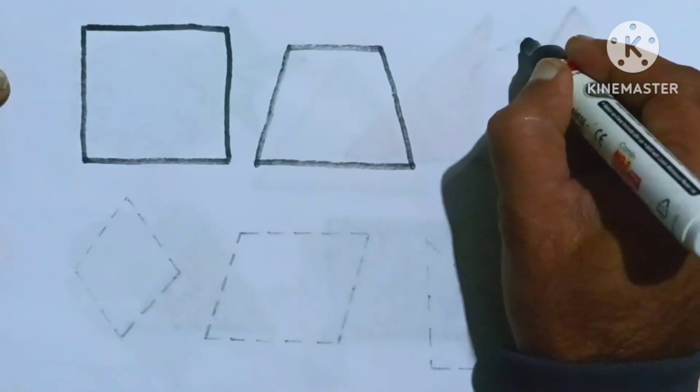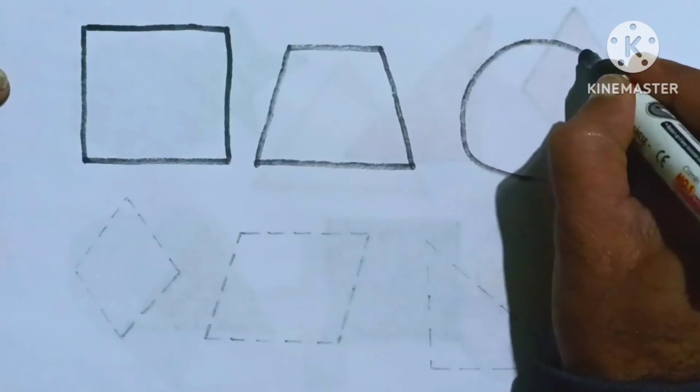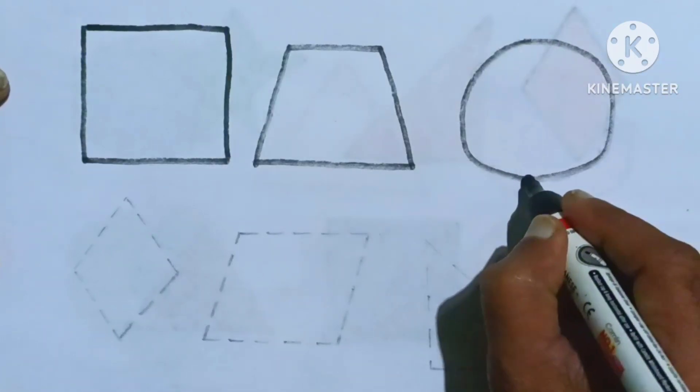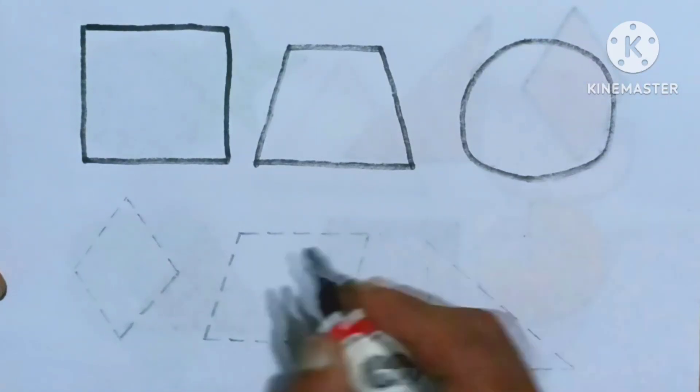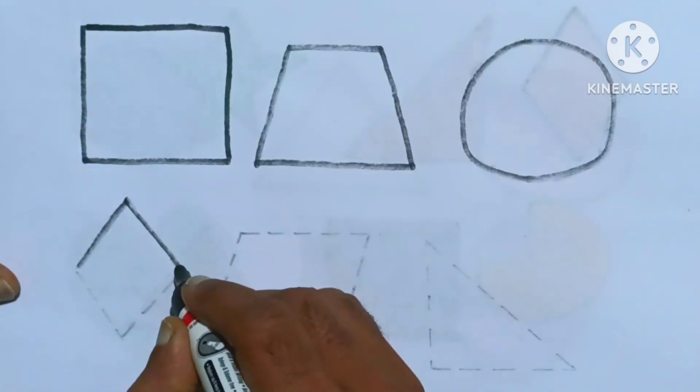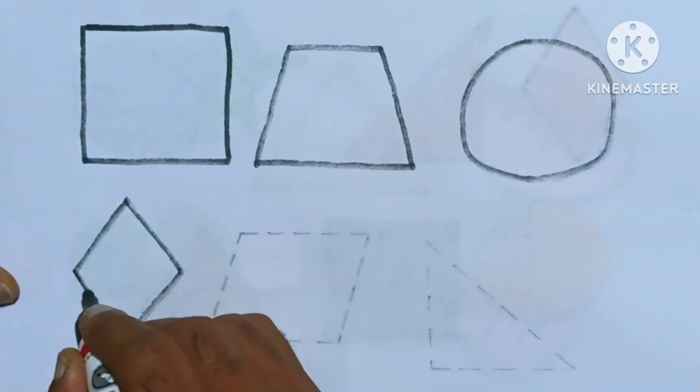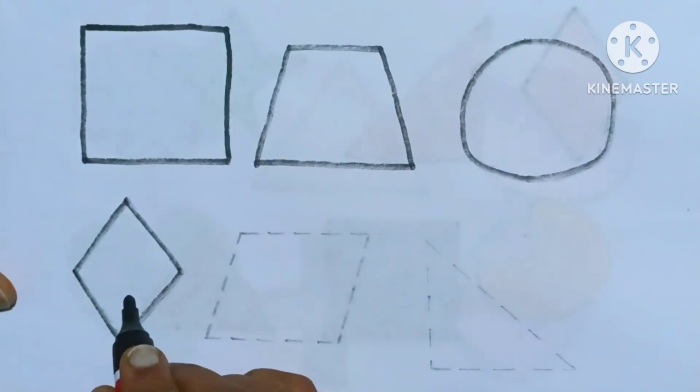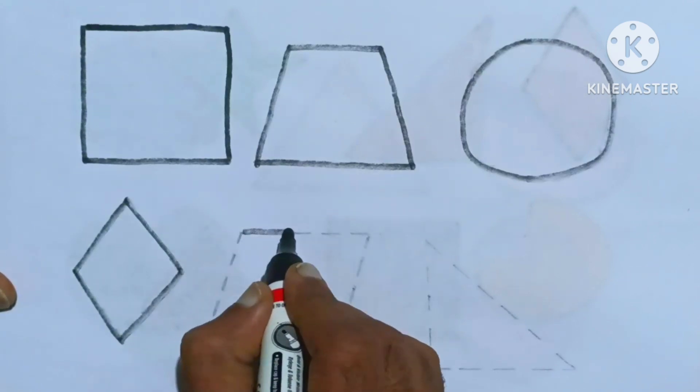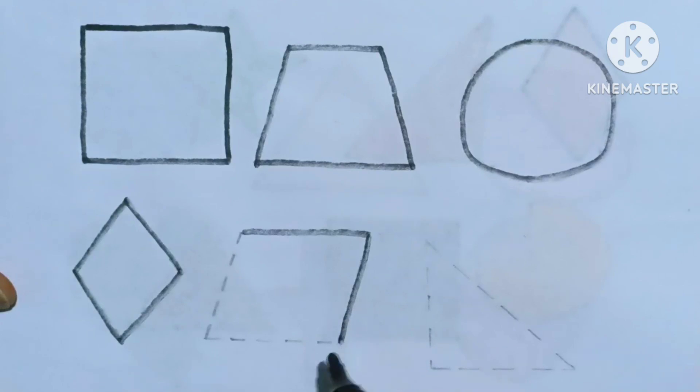It's a circle. It's a circle shape. Circle. It's a diamond shape, kids. Which shape, kids? It's a parallelogram shape. Parallelogram.